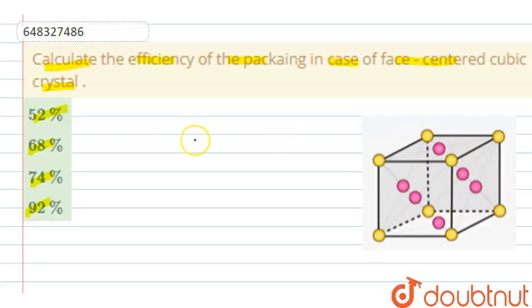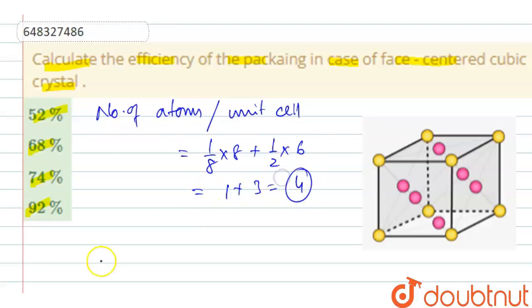So, therefore, the number of atoms per unit cell is equal to 1/8 from each corner times 8 corners plus half contribution from each face times 6 faces, which is equal to 1 plus 3 equals 4.